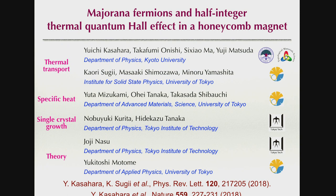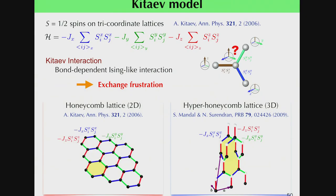In the last topic, I'd like to talk about Majorana fermions and the half-integer thermal quantum Hall effect in honeycomb magnets. Recently, the Kitaev spin model has attracted much attention as an exactly solvable model of quantum spin liquids. This is the Hamiltonian of the Kitaev model, defined for half-spins on three-coordinate lattices.